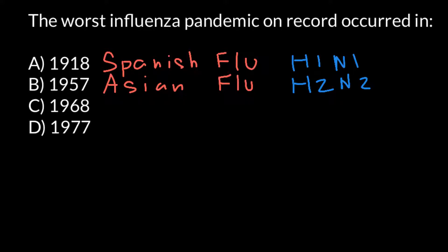The total number of pandemics in the 20th century was three, but we see four years listed here — that means one of these years was actually not a pandemic but rather an epidemic. Now let's move to answer C: 1968, when the Hong Kong flu occurred. This was also a pandemic.